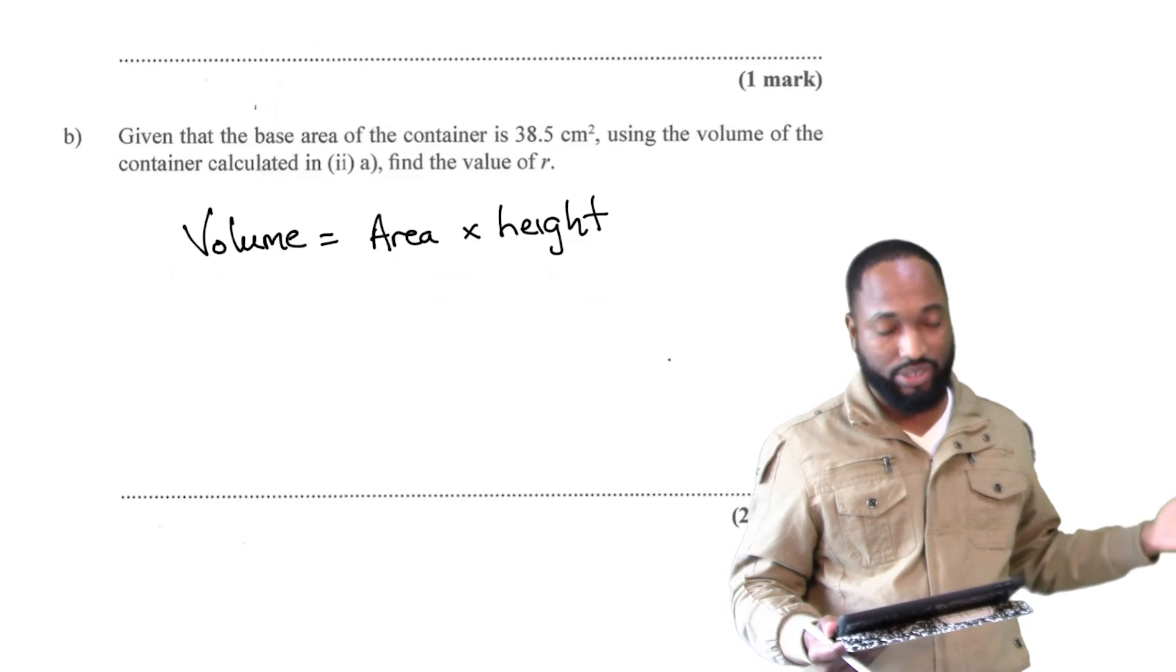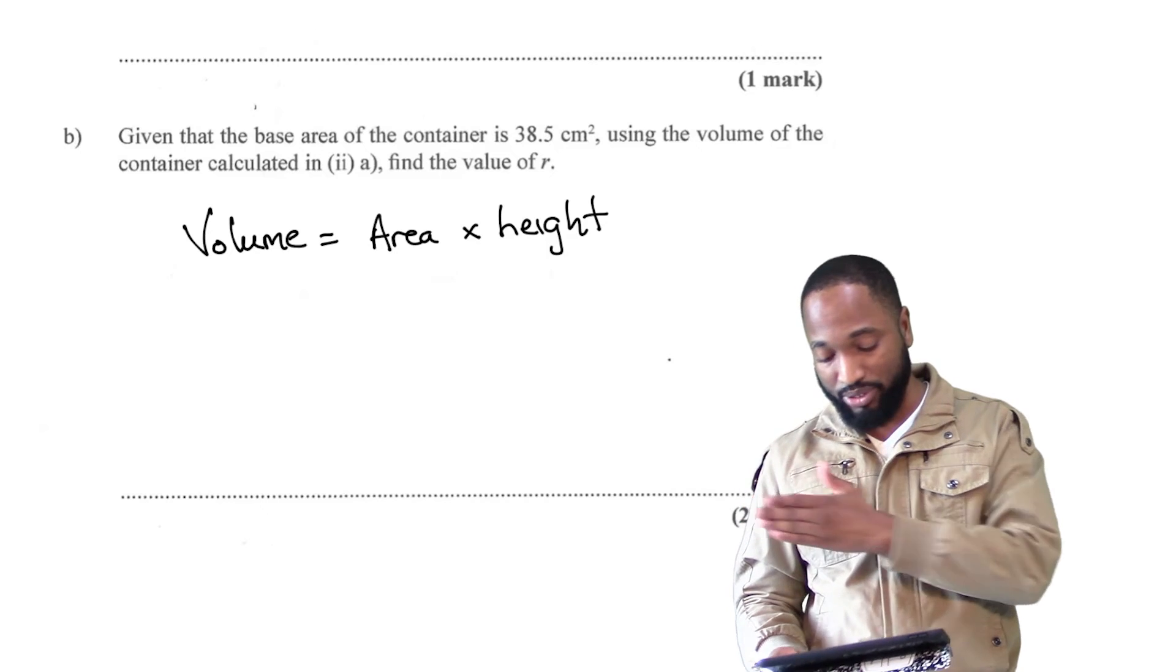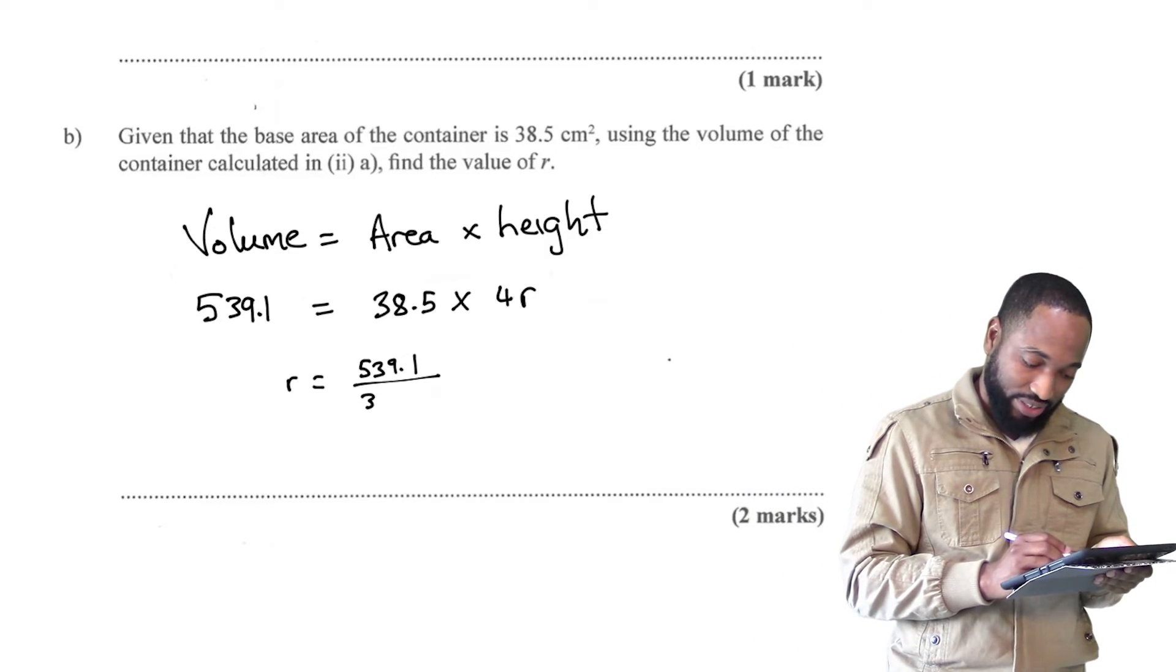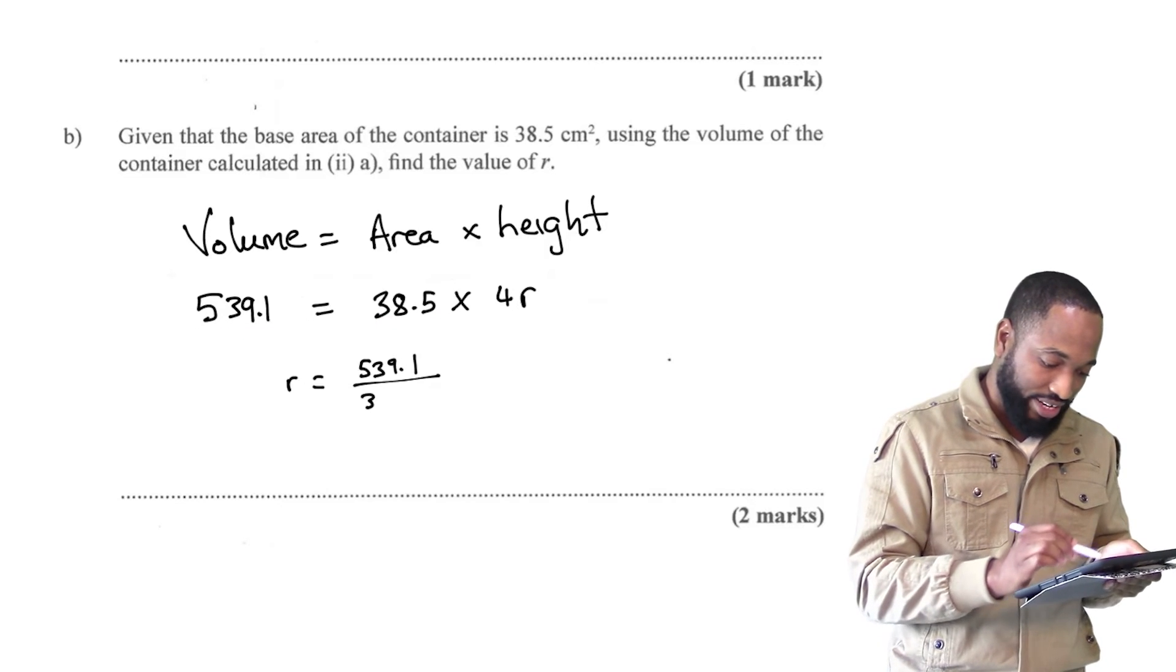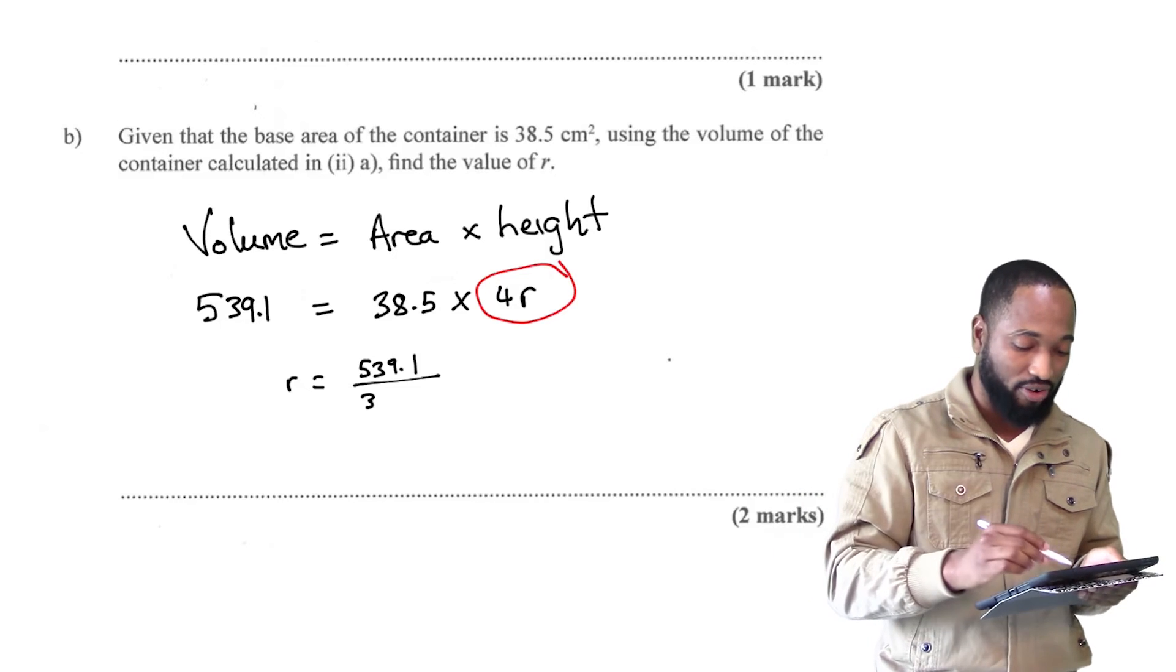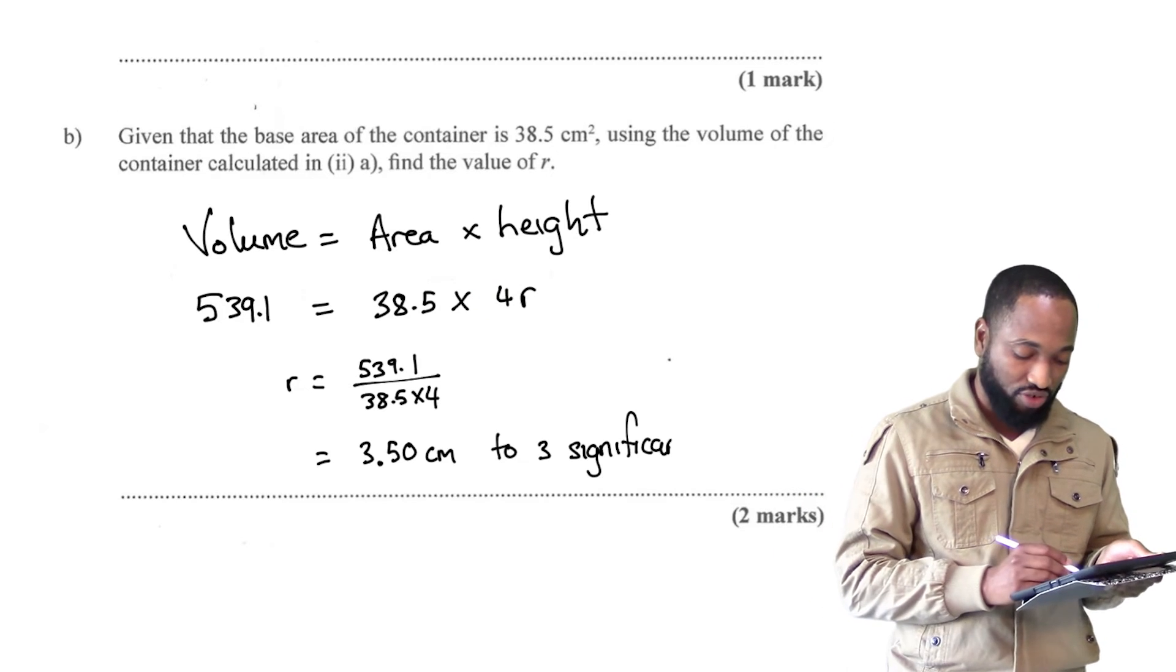So let's see how that is done. Volume is equal to area times height because it's a prism. Volume is equal to the cross-sectional area times the height you drag the prism through. So this is going to be the area that was given. Use the volume. The height is actually 4r. That's why the height was 4r all along. And then you make r the subject of the formula and you get 3.50.